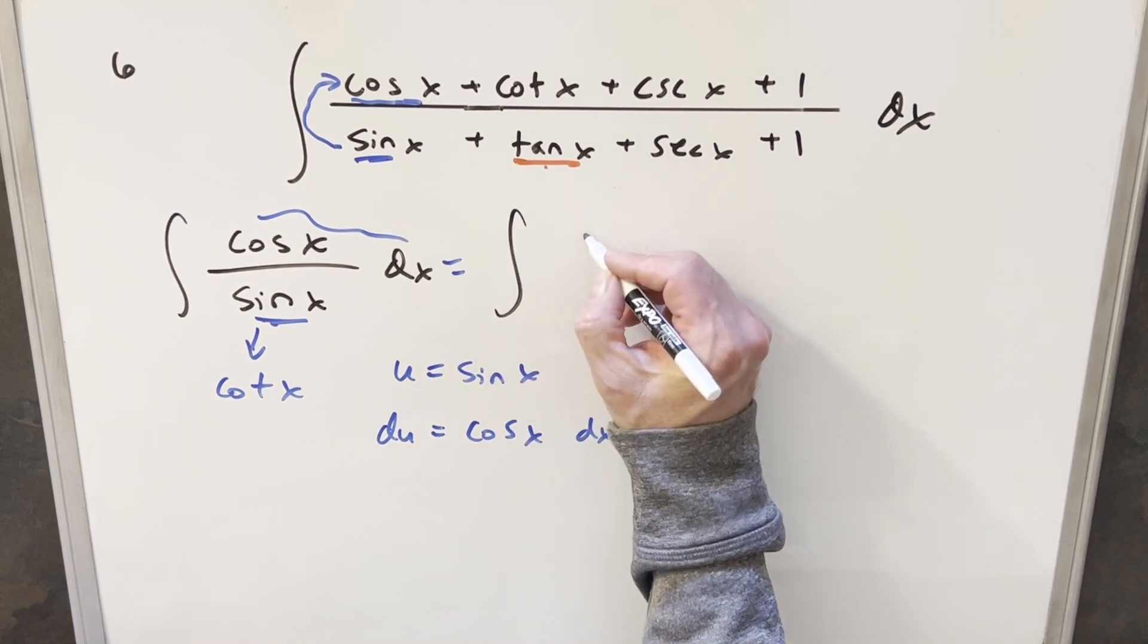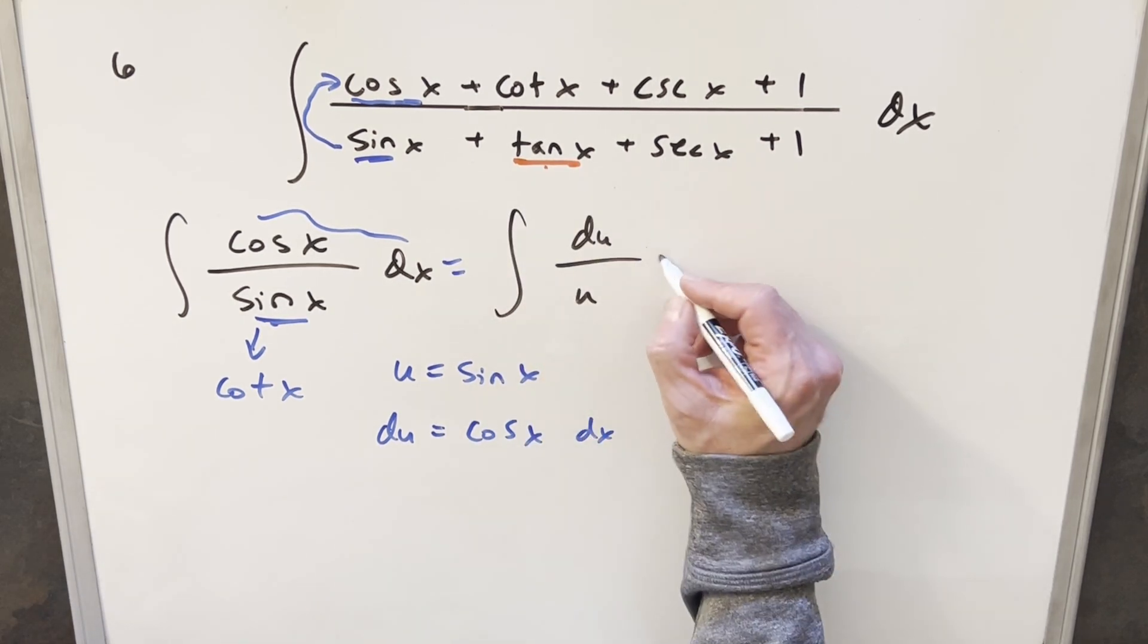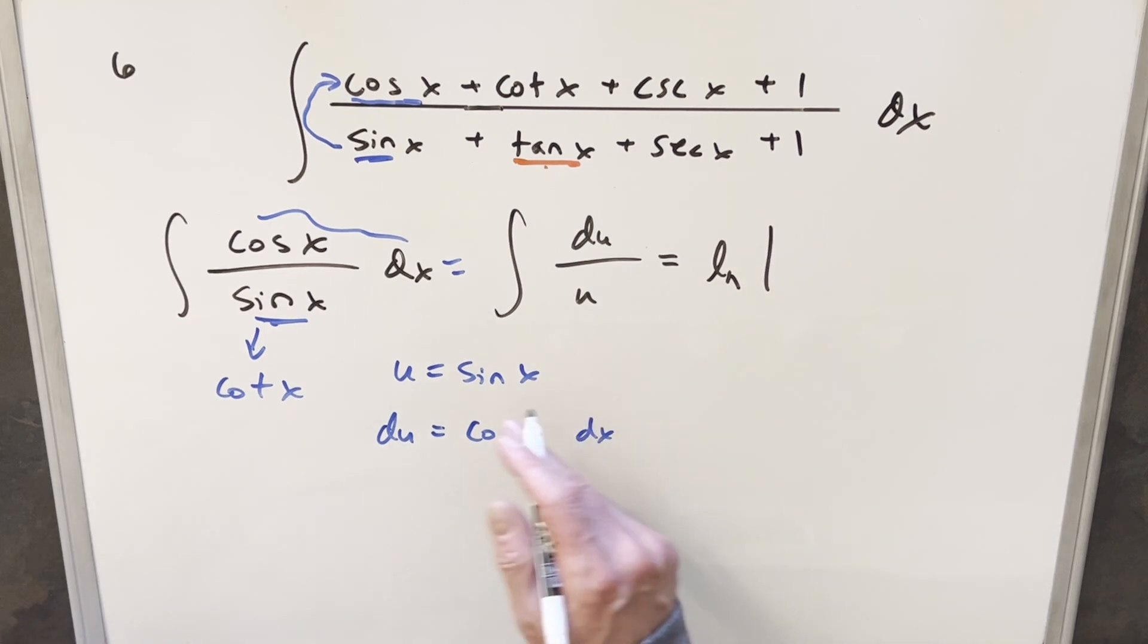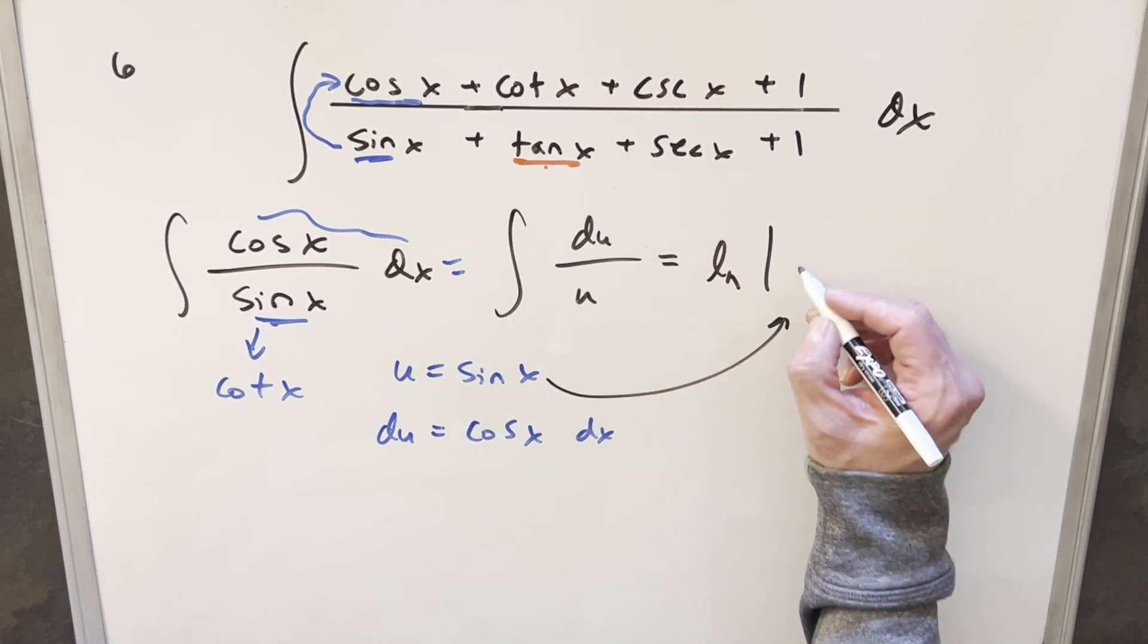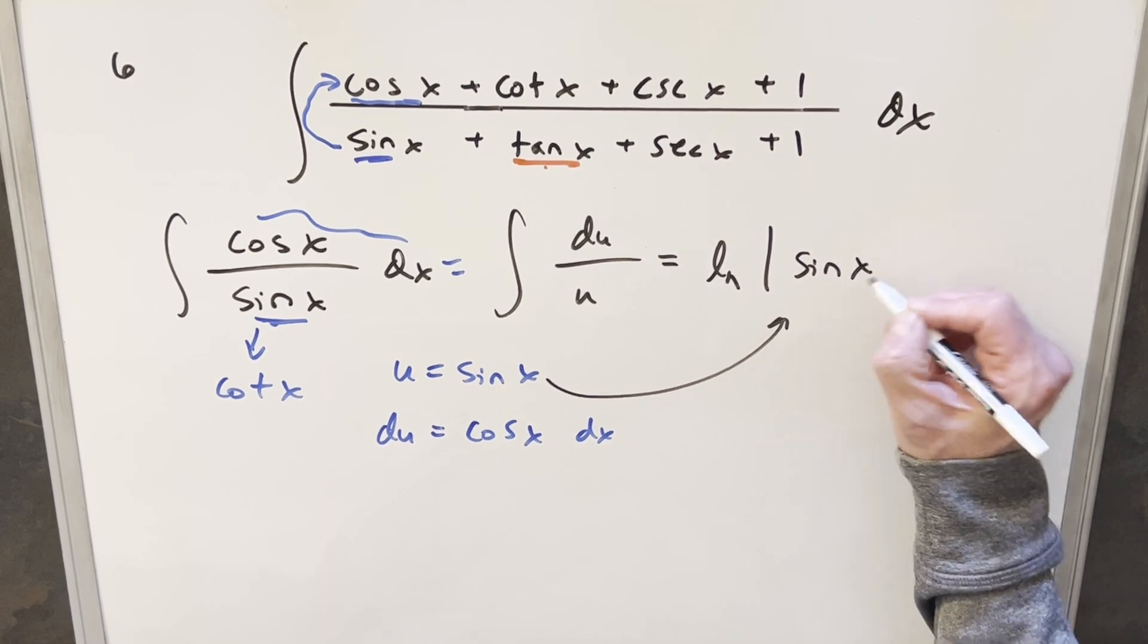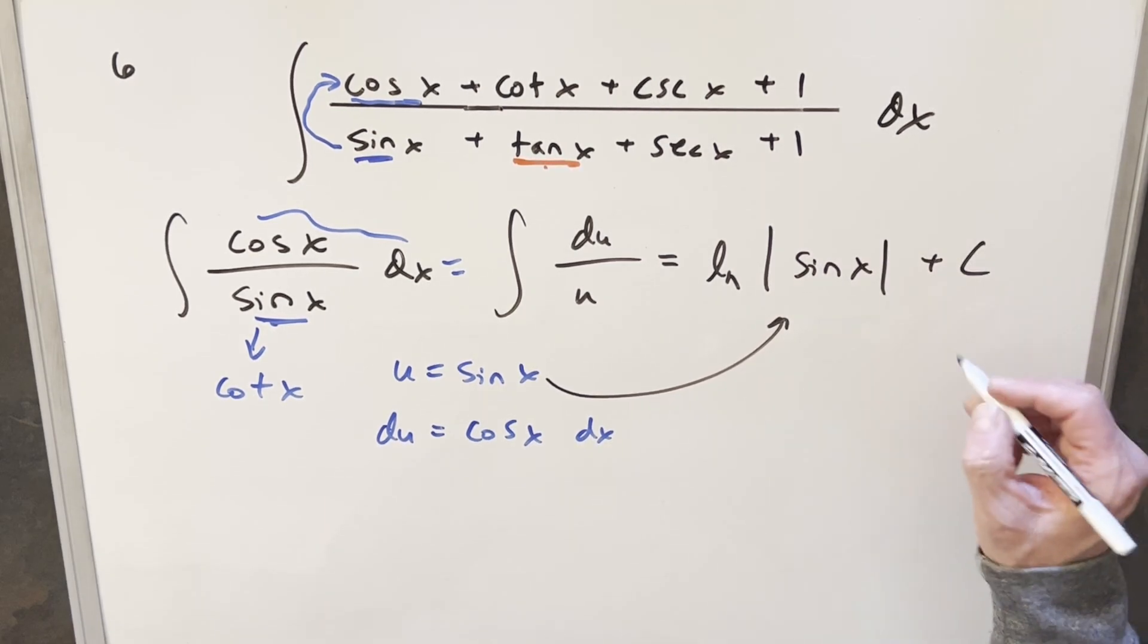So doing this substitution, we end up with just du over u. But for the solution to that, we're just going to get natural log absolute value of u. I'm just going to back substitute it. So for our final solution, we'll just have natural log absolute value sine x plus c, and that's it.